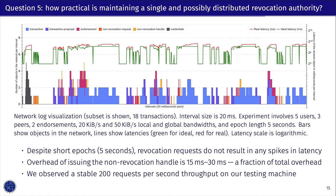Fifth, how practical is maintaining a single and possibly distributed revocation authority? One may wonder whether the revocation authority would be a bottleneck, both in terms of load of a single server and network usage. We coded up detailed network telemetry in our prototype and observed that the revocation requests do not result in a spike of latency even for relatively short epochs. We also ran a torrent of requests against a single remote server that only processed non-revocation requests, and observed that it can handle at least 200 requests per second. We conclude that our revocation mechanism is practical.